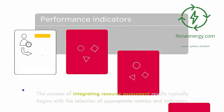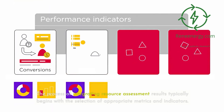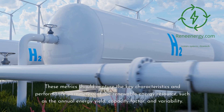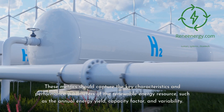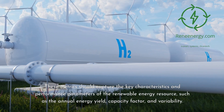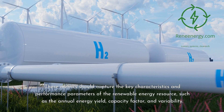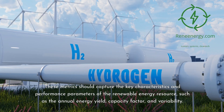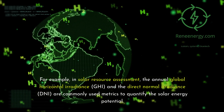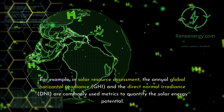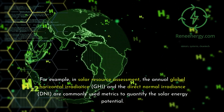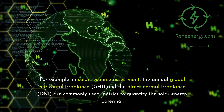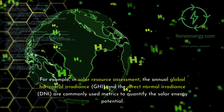The process of integrating resource assessment results typically begins with the selection of appropriate metrics and indicators. These metrics should capture the key characteristics and performance parameters of the renewable energy resource, such as the annual energy yield, capacity factor, and variability. For example, in solar resource assessment, the annual global horizontal irradiance (GHI) and the direct normal irradiance (DNI) are commonly used metrics to quantify the solar energy potential.